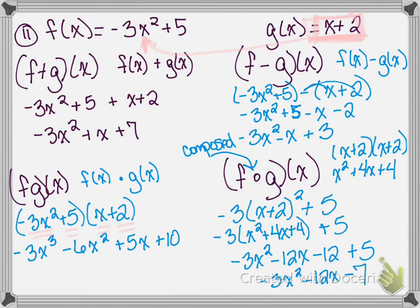So we have negative 3x squared minus 12x minus 7, and that is the final answer for f composed of g of x.